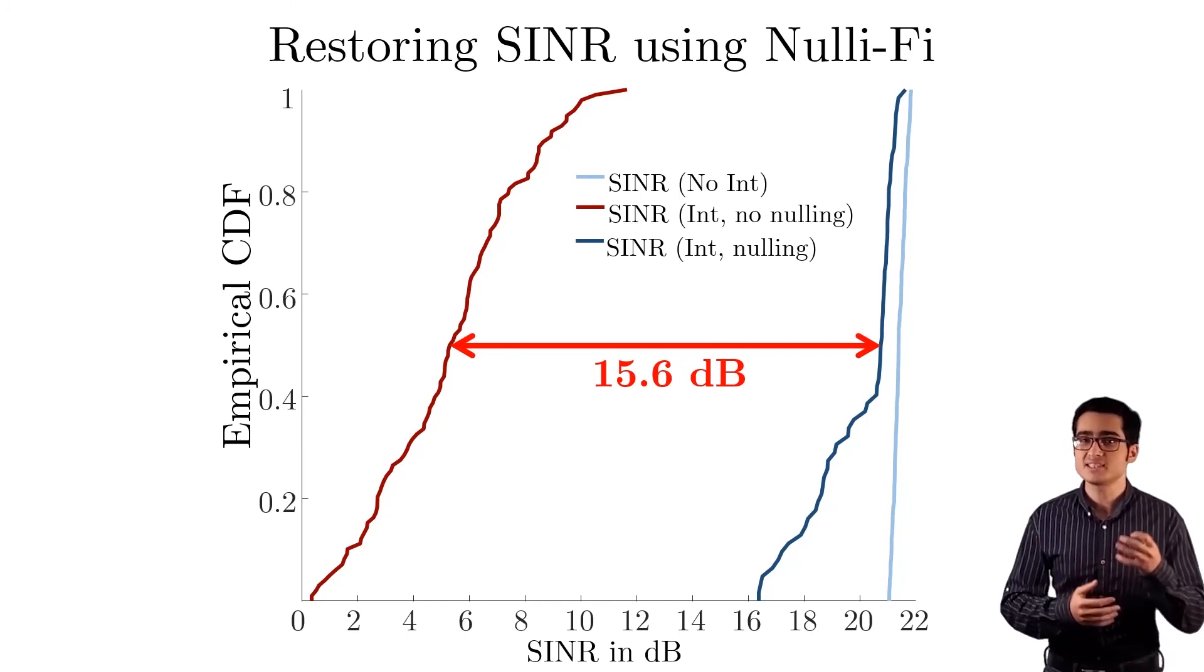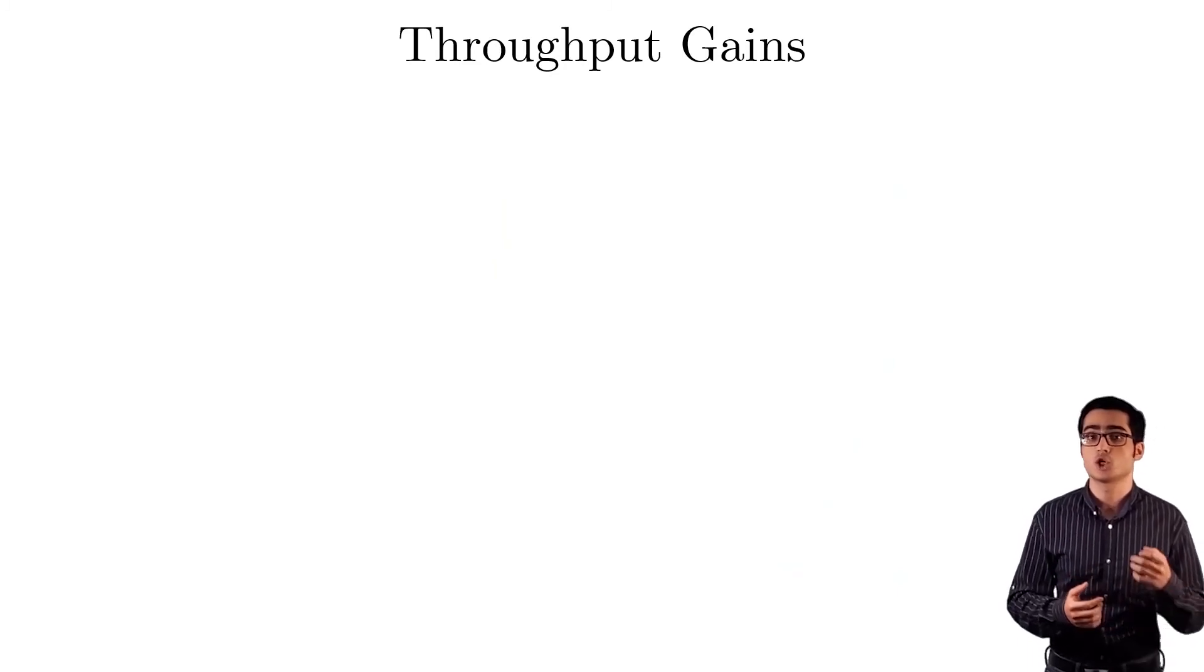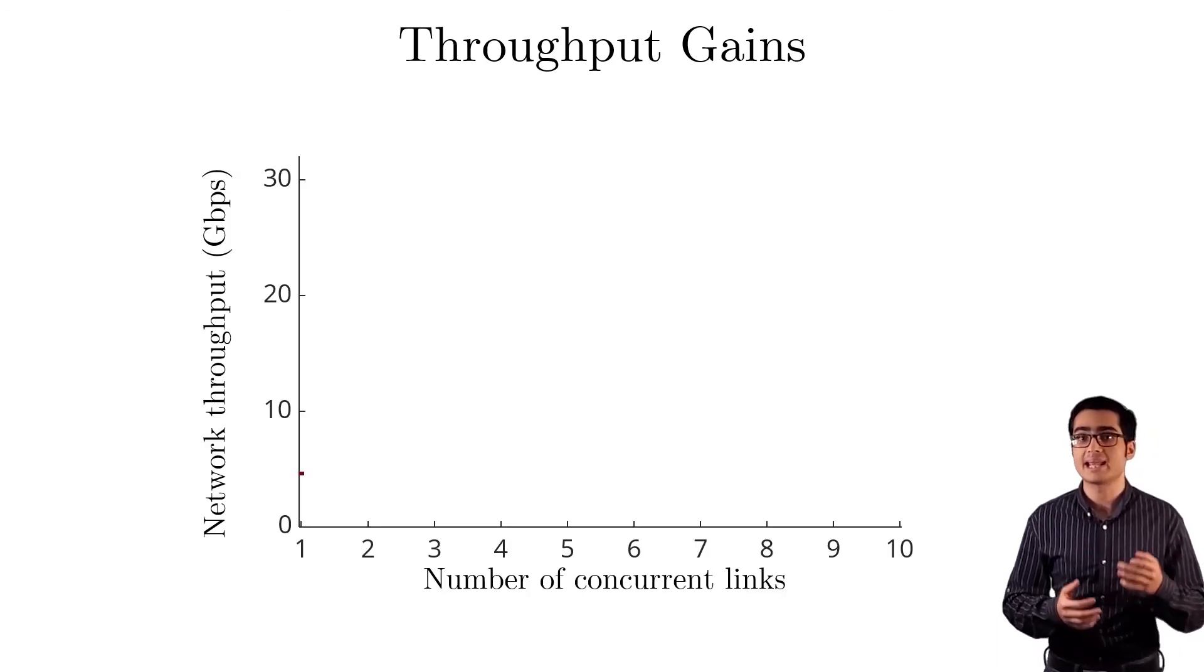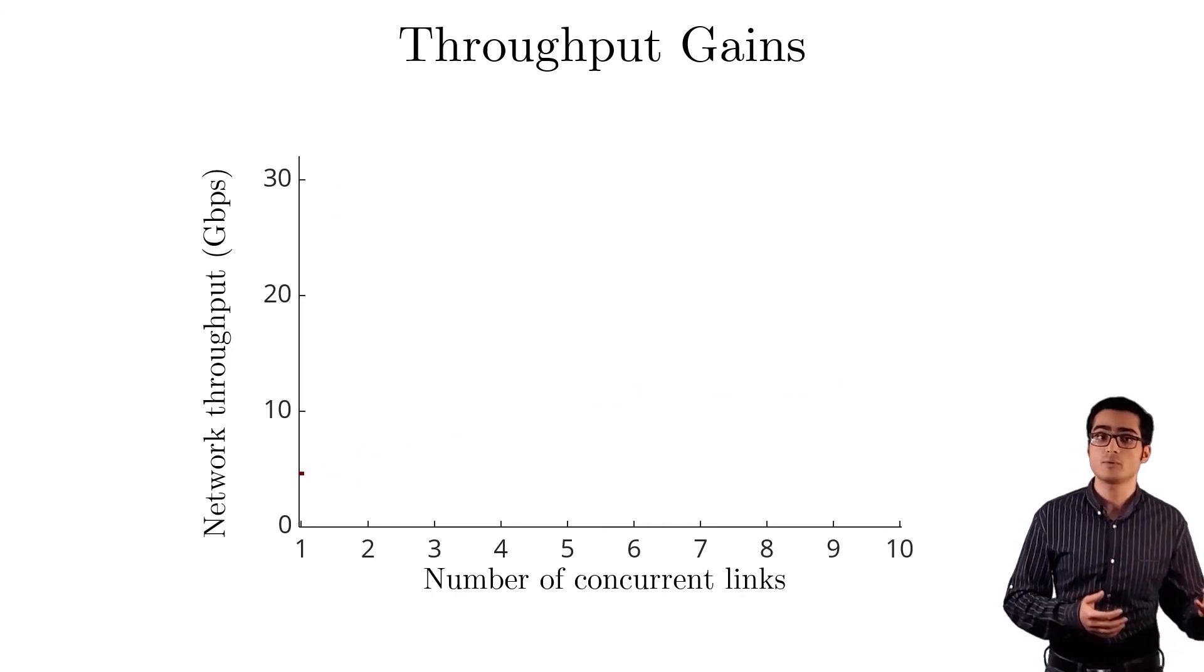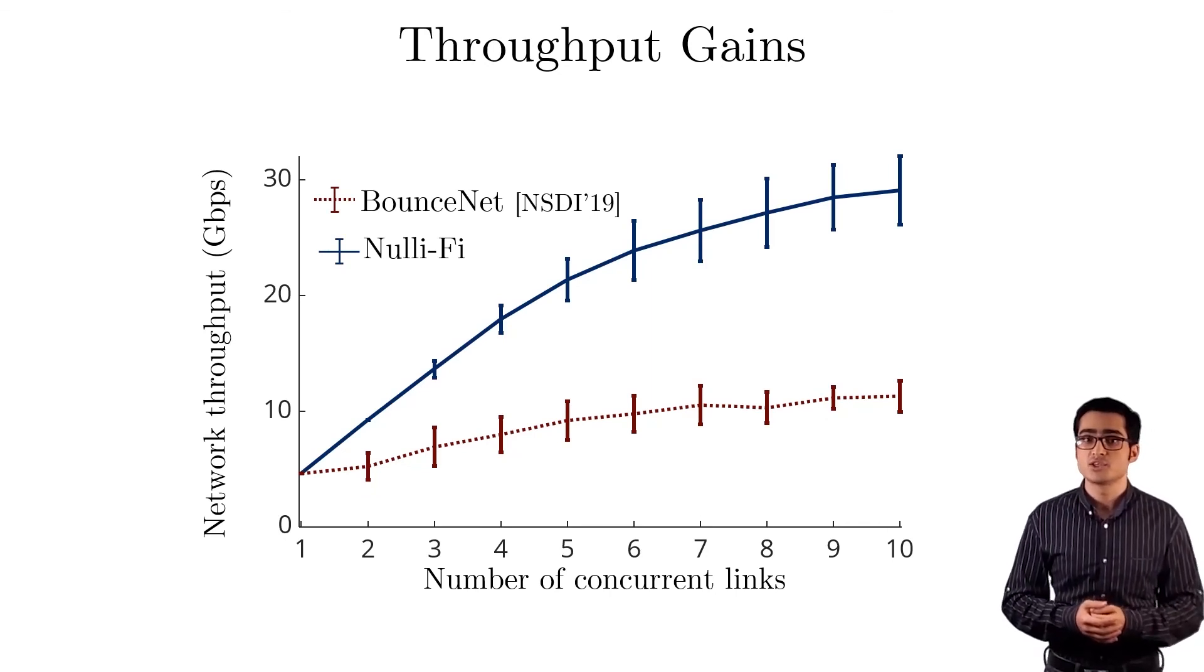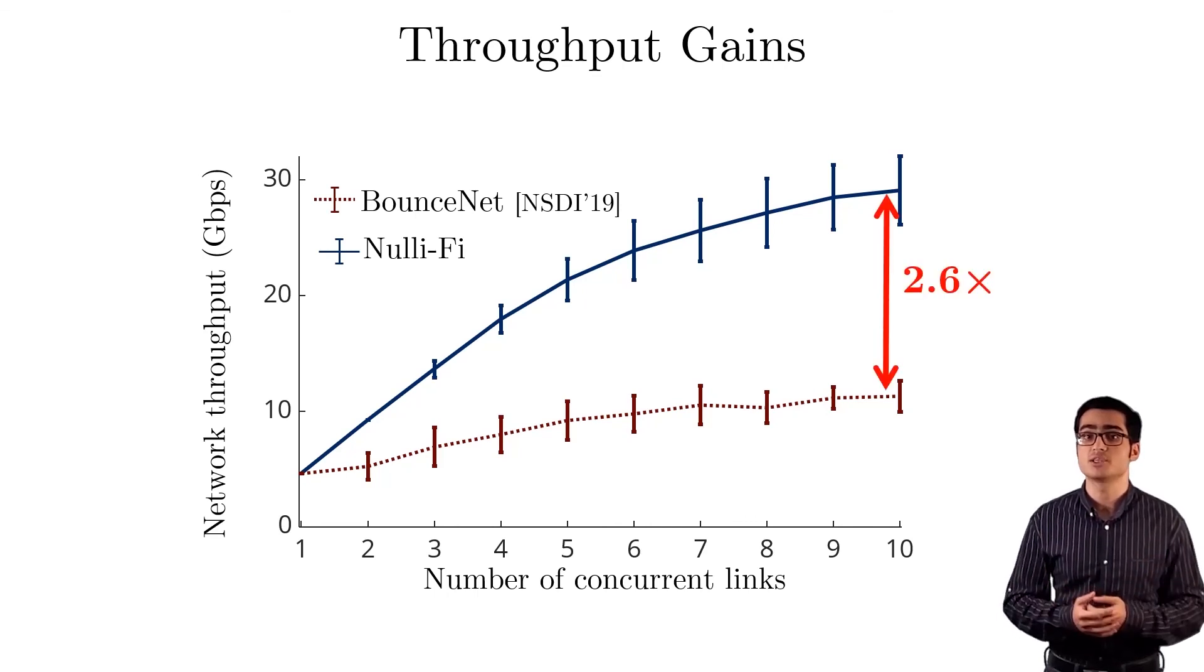To see the significance of suppressing interference using Nullify, we implemented it on a test bed with concurrent links, and compared it with recent work BounceNet, that enables multiple concurrent links. We measured the overall network throughput against the number of links. Throughput using BounceNet is shown in brown, while using Nullify gives us the blue curve. Since Nullify can suppress interference between links, it can improve network throughput by up to 2.6 times in dense networks.